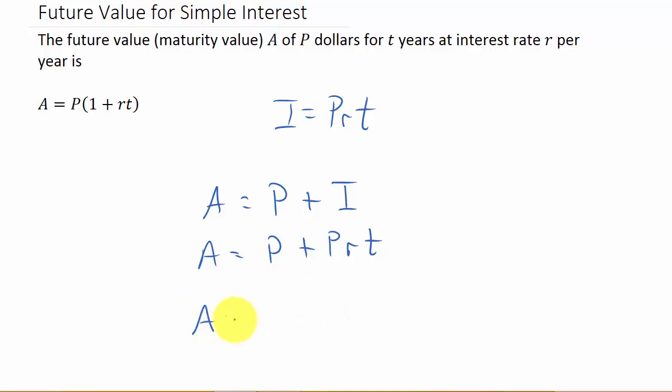And so A is equal to, and then you can see here, I have a common factor of P, and so that's factor the P out, and that leaves us with 1 plus RT. And there's your future value.